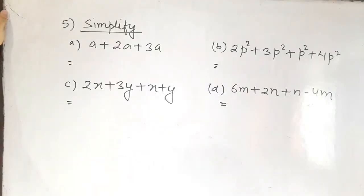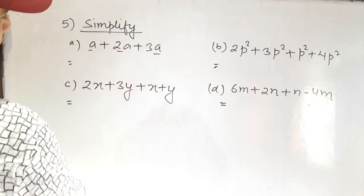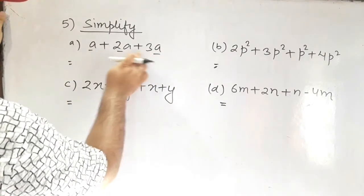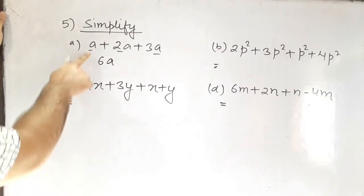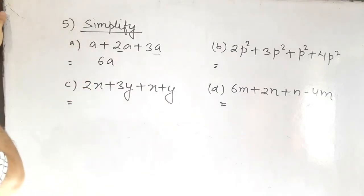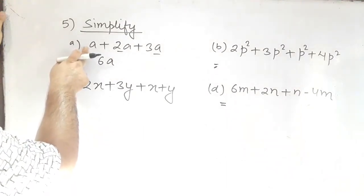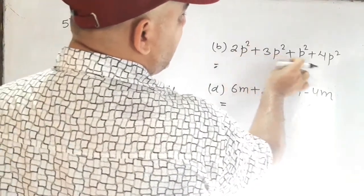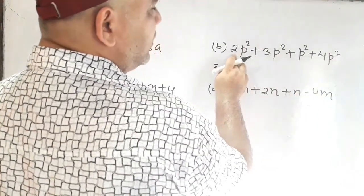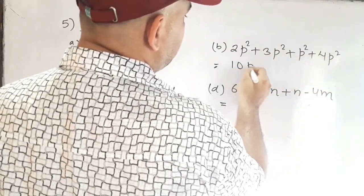Question number 5: Simplify. Here all three terms are like terms, so they can be added directly: 3 plus 2 equals 5, plus 1 equals 6a. Always remember, 'a' stands for 1a — if there is no coefficient, the coefficient is understood to be 1. In the next set, all are like terms: 2 plus 3 equals 5, plus 1 equals 6, plus 4 equals 10, giving 10a cubed.